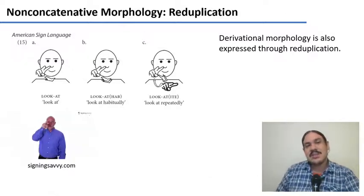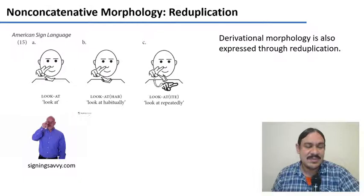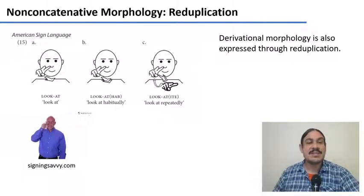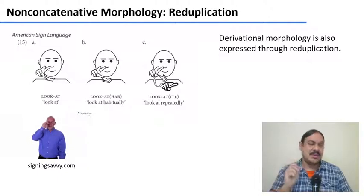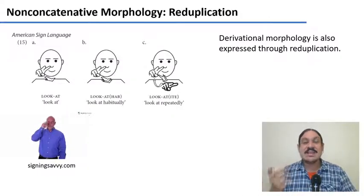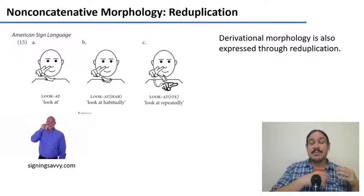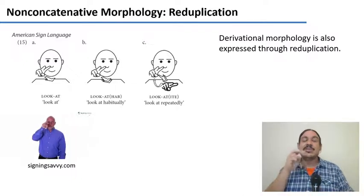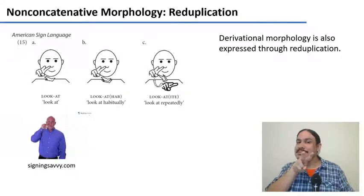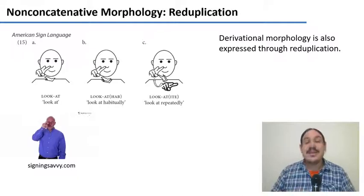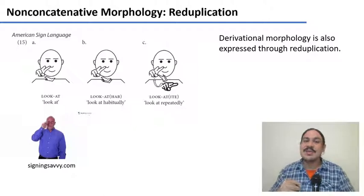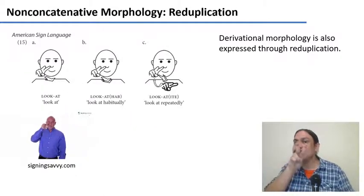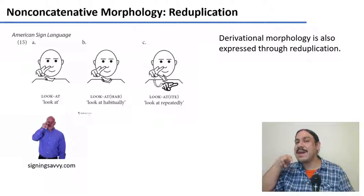Other types of non-concatenative morphology include reduplication. This is an example from American Sign Language where you have the root 'look at' — one motion. Sign language has aspect; for example, the habitual aspect means that you do something today, tomorrow, the day after. To 'look at' habitually is just a reduplication of the root. There's another aspect called the iterative aspect, which means you do something again and again and again. To 'look at' repeatedly has a reduplication and then a suffix — you duplicate the root and then pull it back for the suffix.